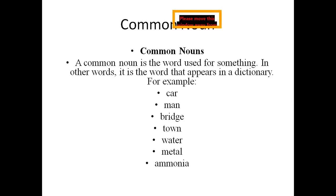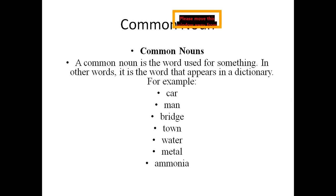A common noun is used for something general where nothing is specified. The common noun is not specified. When a name is not specified for something, it is called a common noun. For example, where we used 'Ali' as a proper noun, in common noun we would just say 'boy'. Common noun examples: car, man, bridge, water, metal.